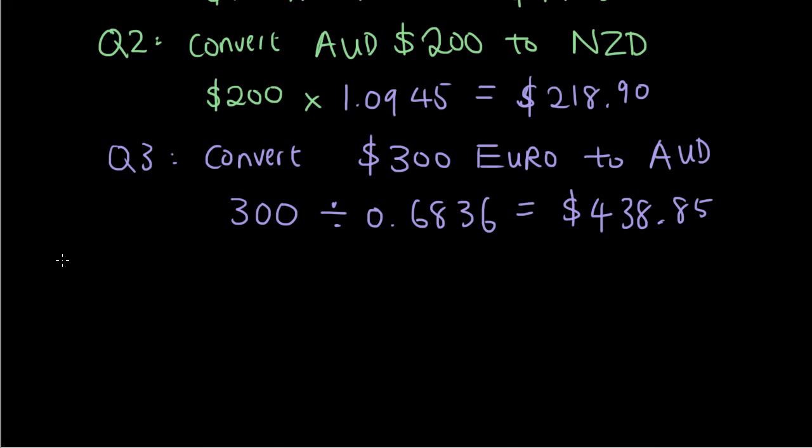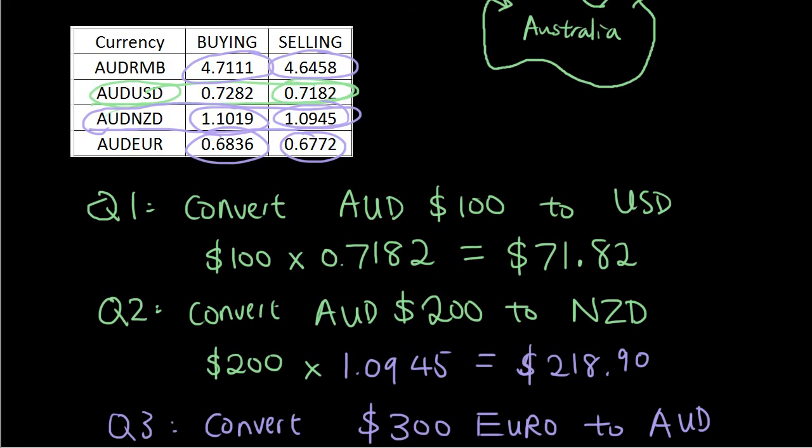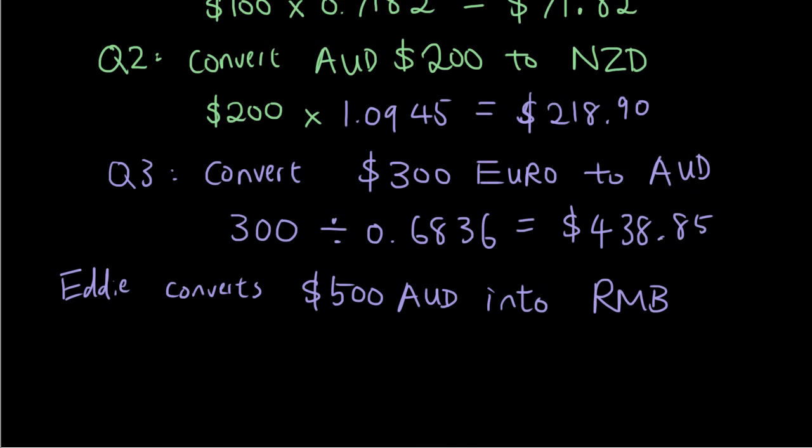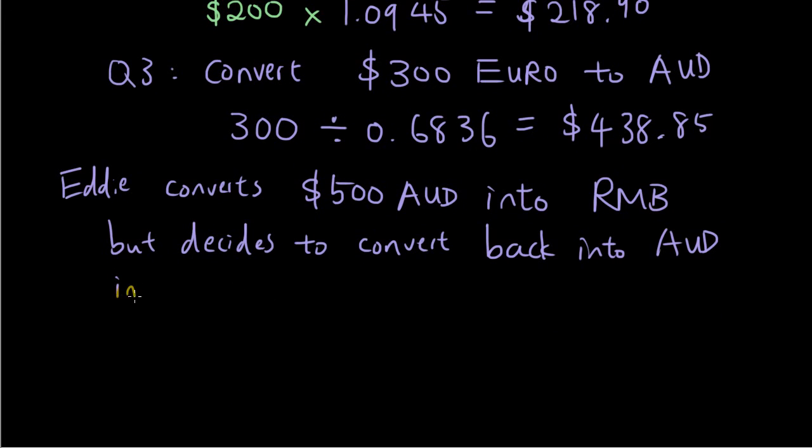let's say that Eddie converts $500 Australian dollars into RMB, which is what they use in China. You can think of as Chinese dollars or something, but decides to convert back into Australian dollars immediately. So I changed my mind. How much money does he lose?